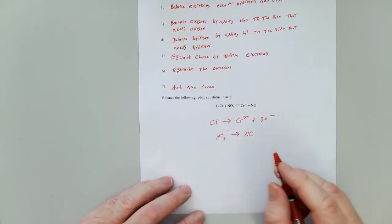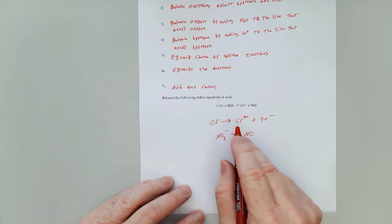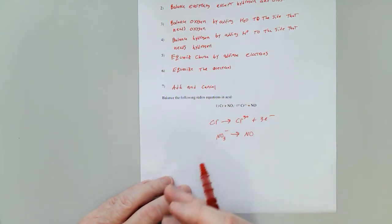Step number two. One chromium and one chromium, one nitrogen and one nitrogen. Well, everything is balanced except hydrogen and oxygen.